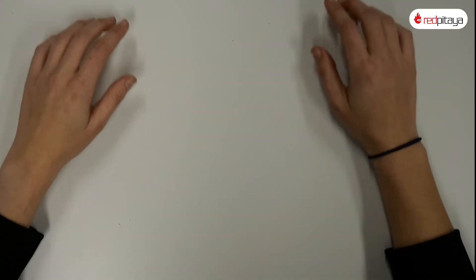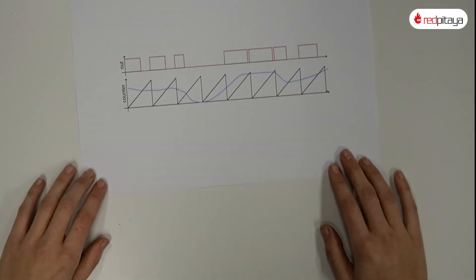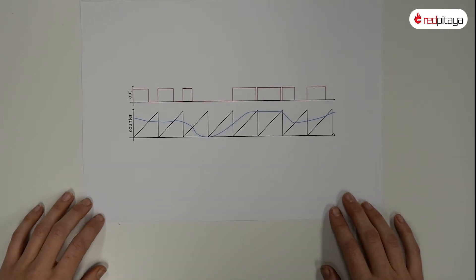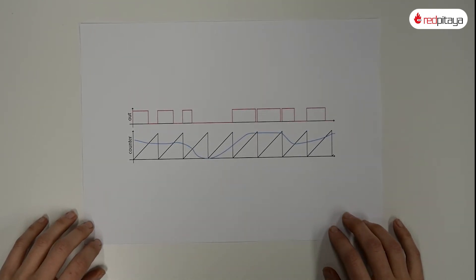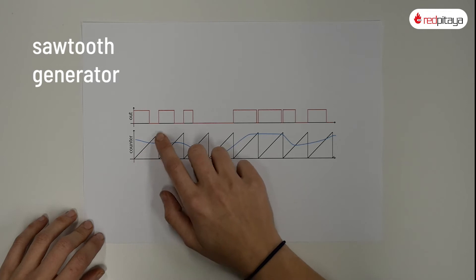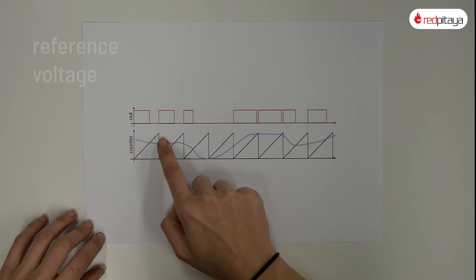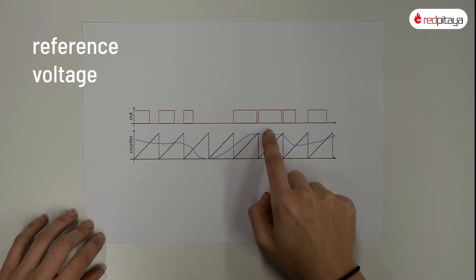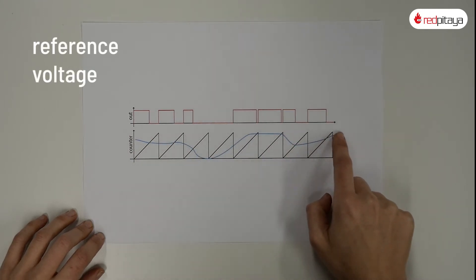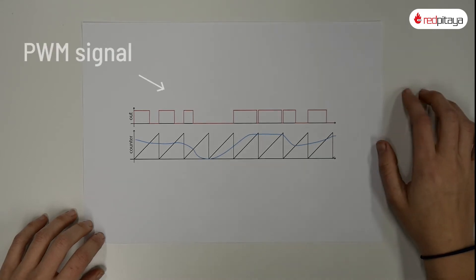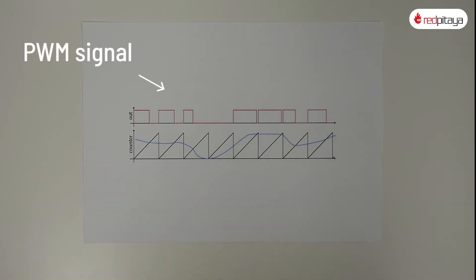PWM can also be realized in analog form. In this case the counter is replaced with a sawtooth generator and threshold value with a reference voltage. Those signals are fed into a comparator which produces the appropriate PWM signal. Because we can, let's build an analog PWM circuit and play with it.